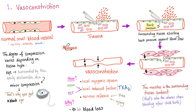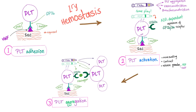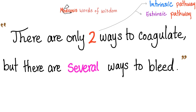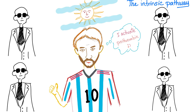First step: vasoconstriction, which is a local myogenic spasm. Remember, there are only two ways to coagulate, but there are several ways to bleed. What are the two ways to coagulate? The intrinsic pathway and the extrinsic pathway.